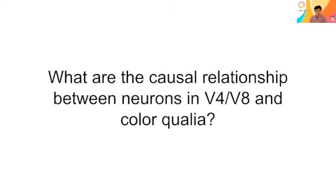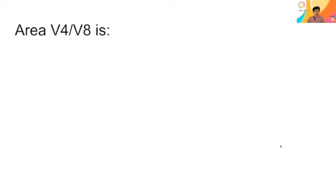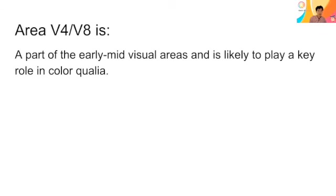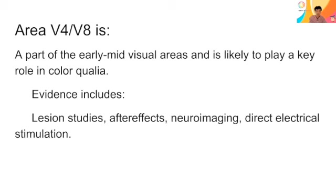What are the causal relationships between neurons in V4, V8, and color qualia? Area V4 or V8 is part of the extrastriate visual areas and is likely to play a key role in color qualia. This is evidenced by several lines of evidence: lesion studies, aftereffects, combined with neural imaging, and finally direct electrical stimulation.